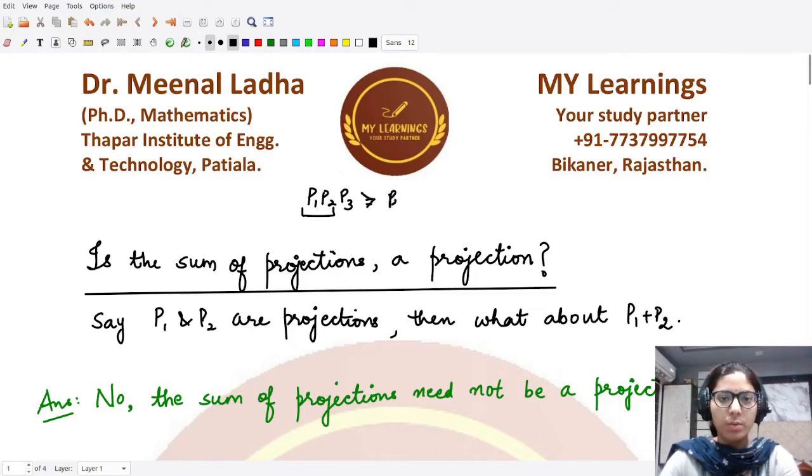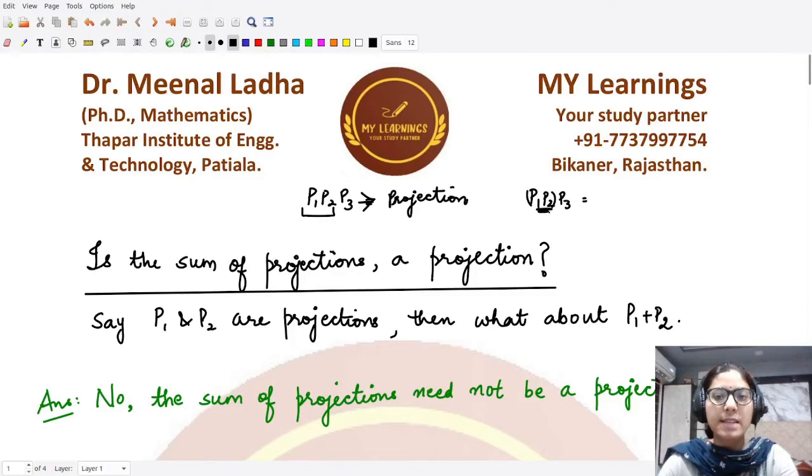This is a projection operator whenever P1 and P2 commute. So this thing is also a projection operator, so this is a projection whenever they commute with each other.